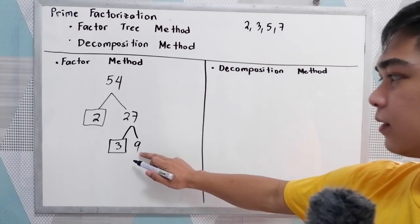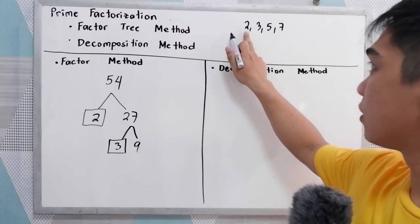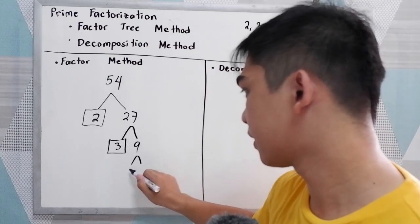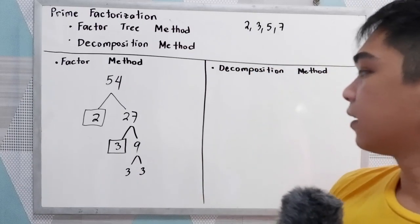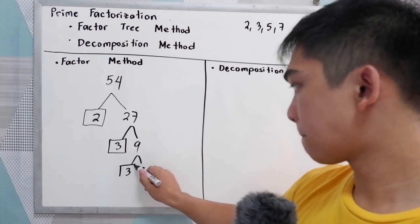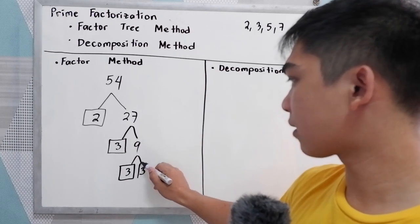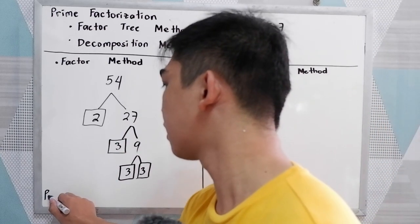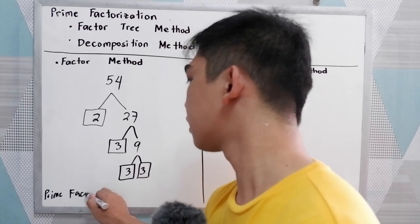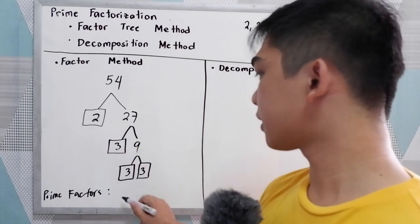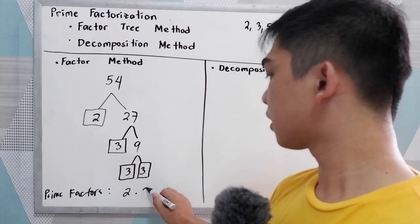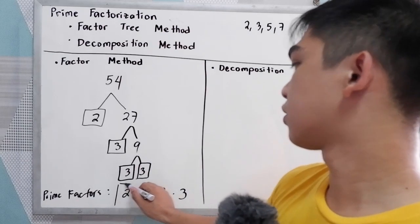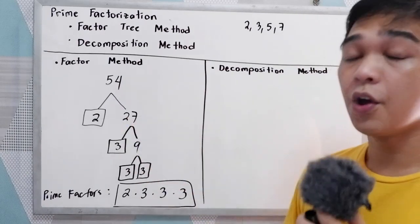Next, 9. Is 9 divisible by 2? No. So proceed to 3. 9 divided by 3 is 3. So we have 3 and 3. Since 3 is a prime number, we need to box 3. So the prime factors of 54 are 2, 3, 3, and 3. If we multiply those together, that gives you 54.